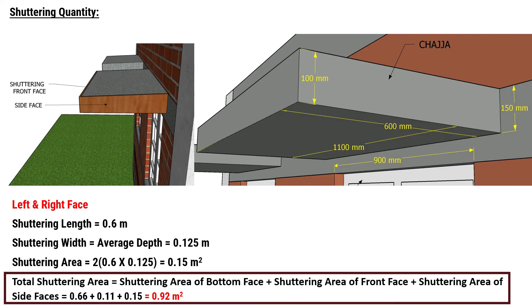The total shuttering area for the chhaja will be equal to the shuttering area of the bottom face plus the shuttering area of the front face plus the shuttering area of the side faces, resulting in a total area of 0.92 square meters.